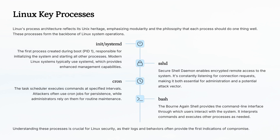On Linux, things look a bit different, but the principles are the same. You've got init or systemd, the first process that starts everything else. sshd handles secure remote access. cron runs scheduled tasks, which can be abused for persistence. bash is the command line interface where everything happens. These are all potential entry points, and defenders watch them like hawks.